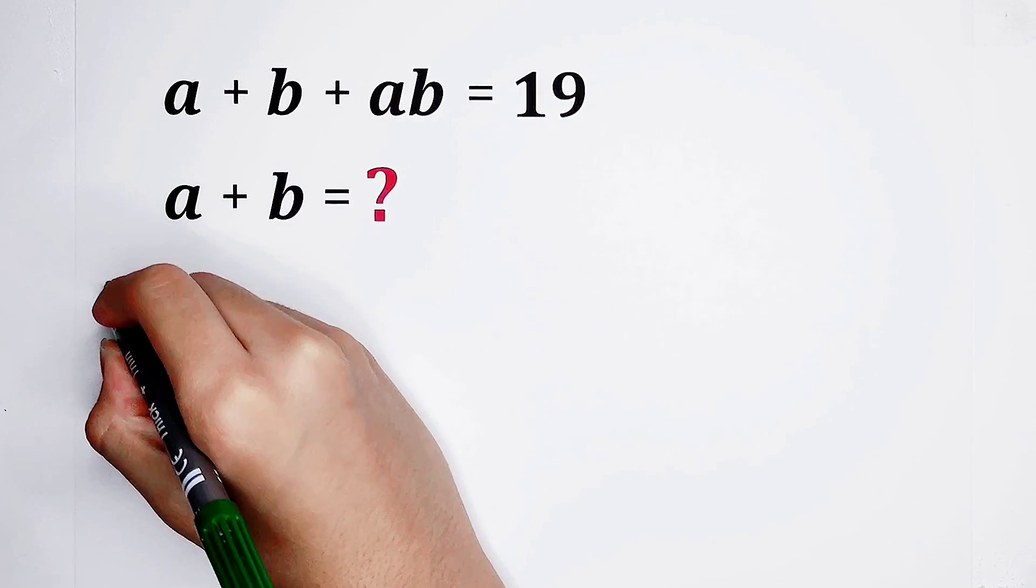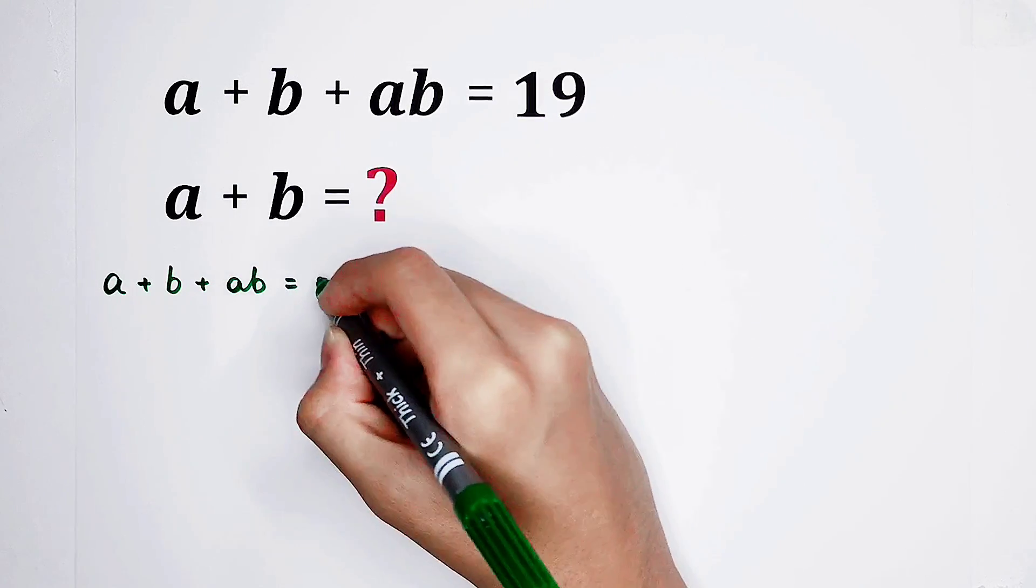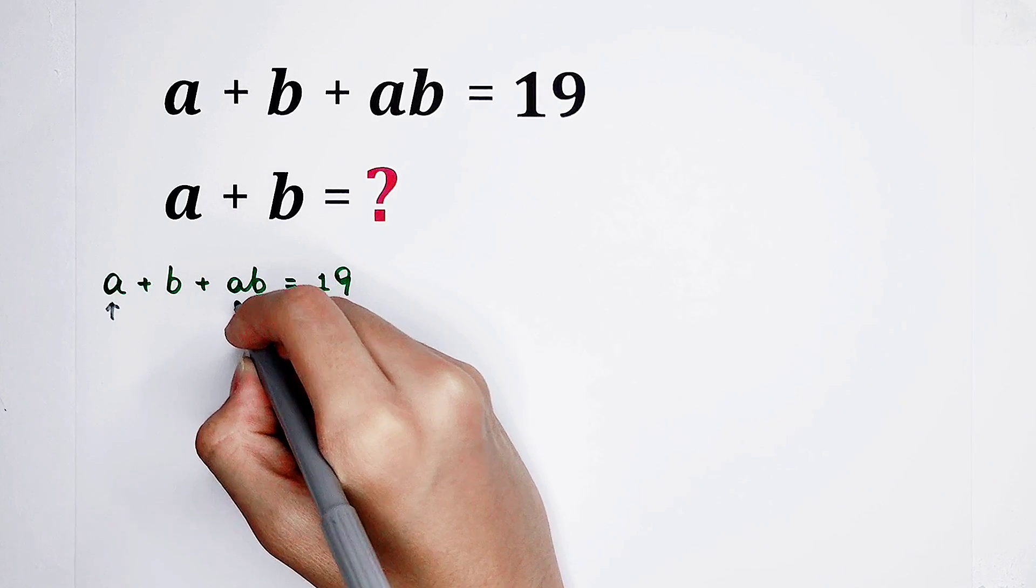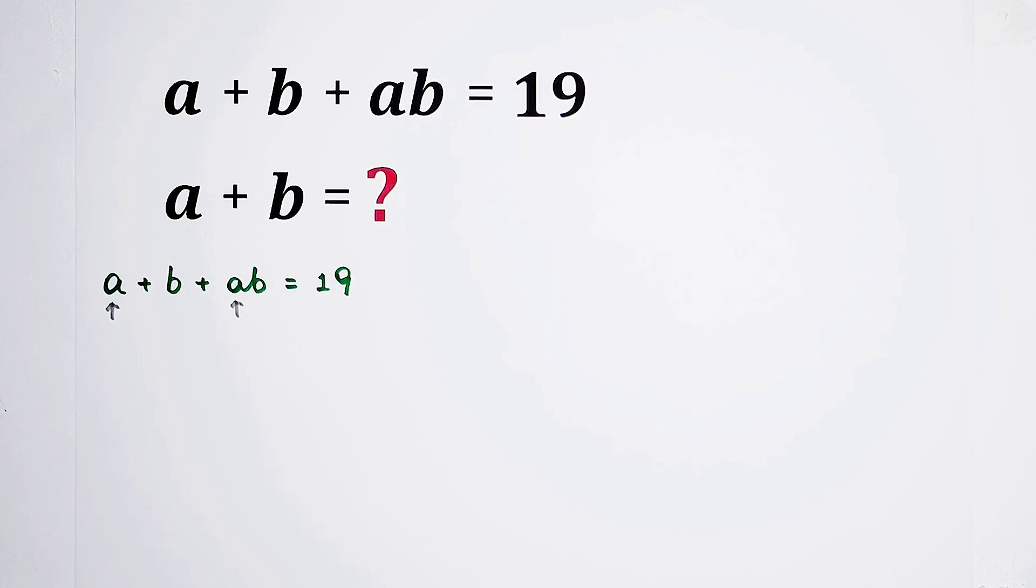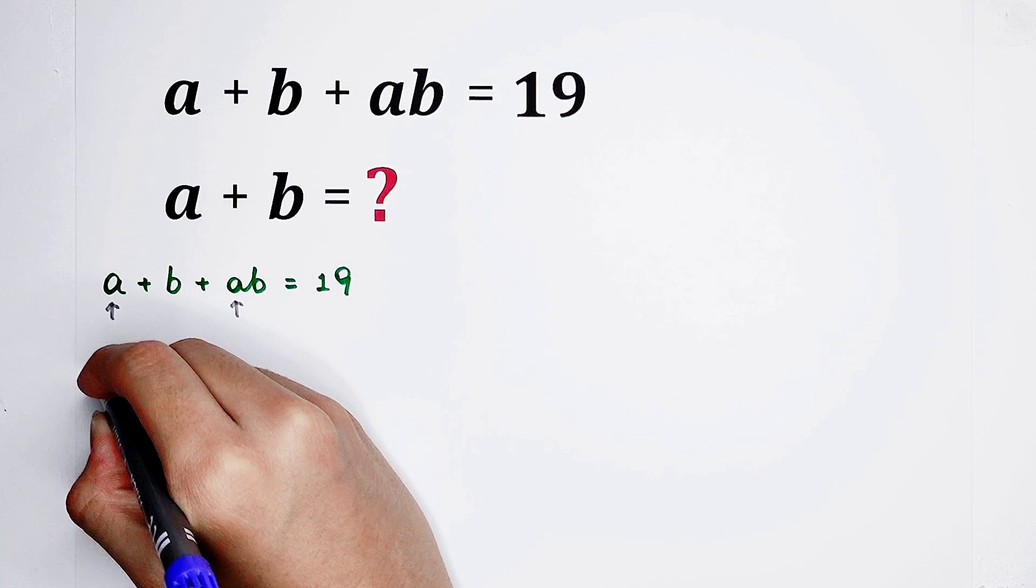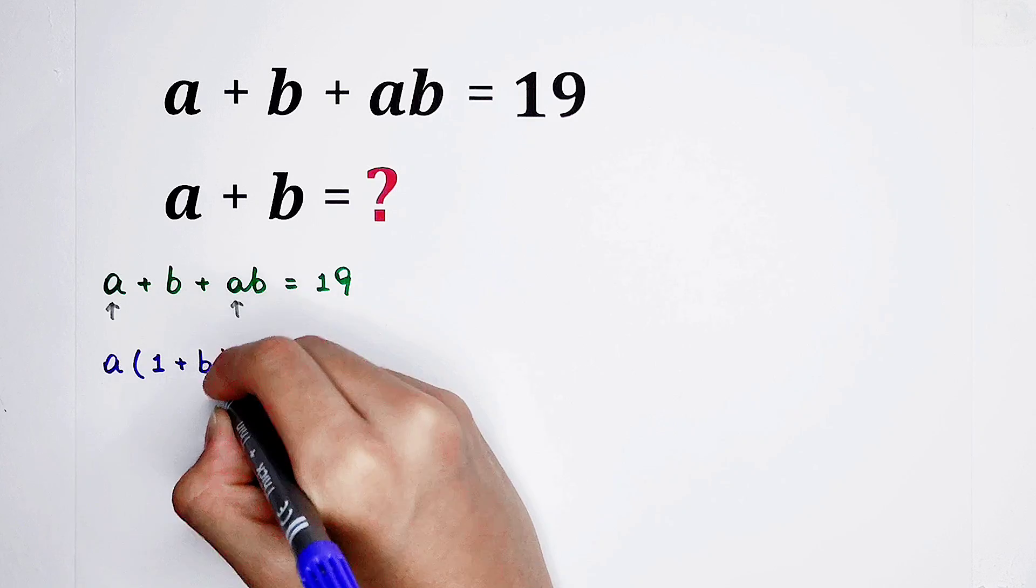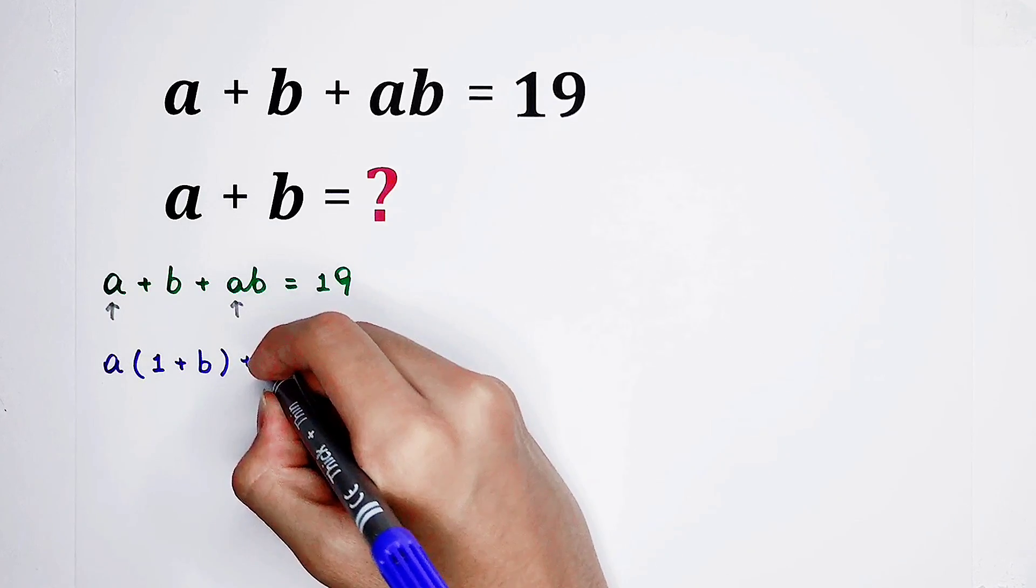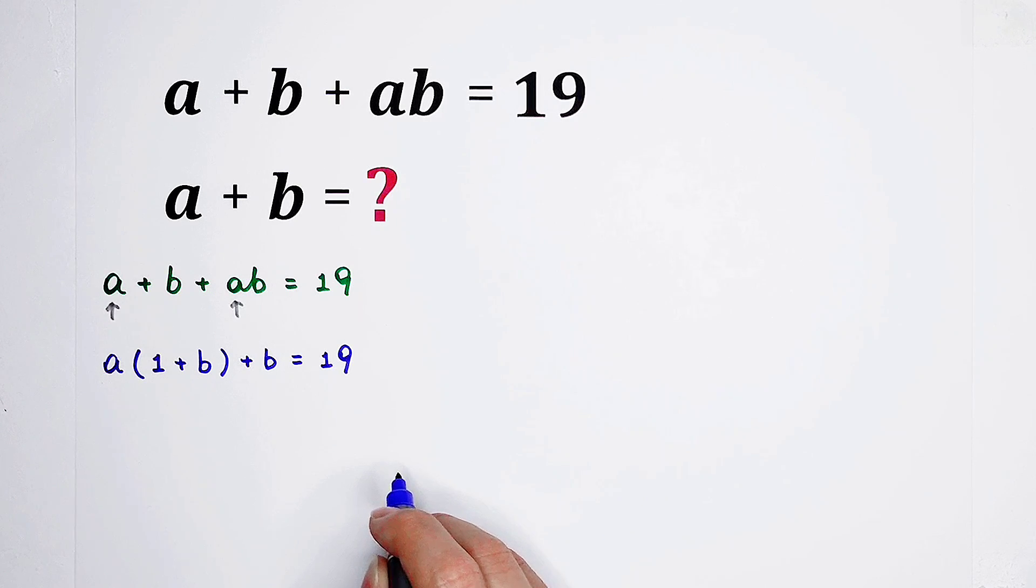A plus B plus AB is 19. And we want to factorize the left side. Look, here is A. Here is A as well. So from these two sections, we can take out an A. Then it'll become A times 1 plus B. In the bracket, it is 1 plus B. However, here is a B left. The right side, 19. Oh no, it doesn't work.